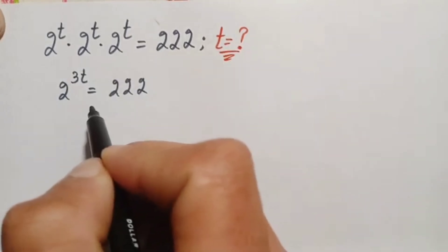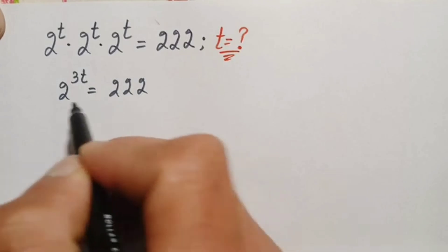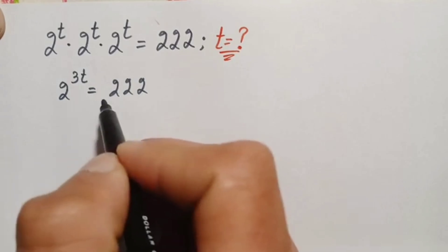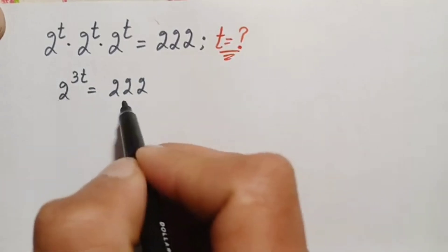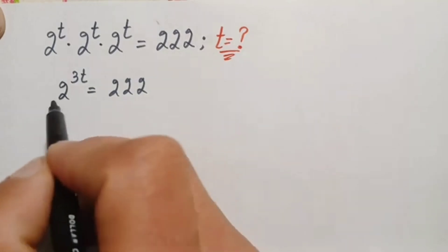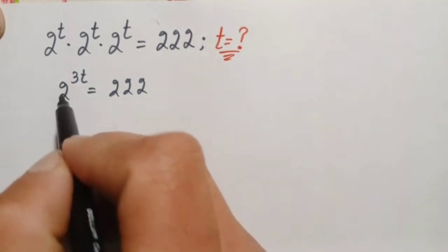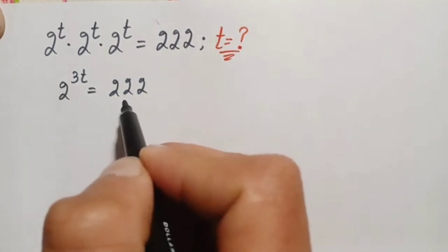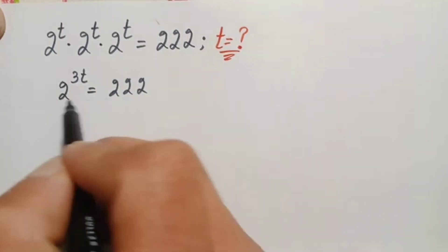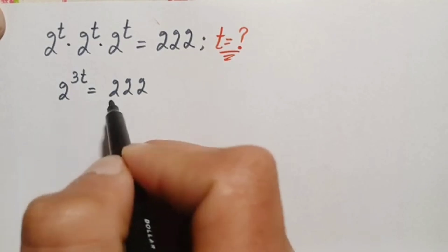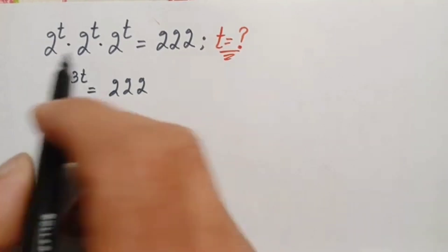There are two possible approaches to solve an equation like this. The first is to take the common log on both sides. The second approach is to notice that this base and this number are divisible by two, so we divide both sides by two.